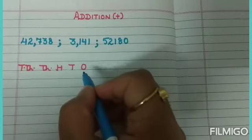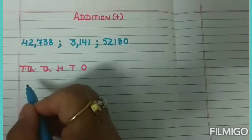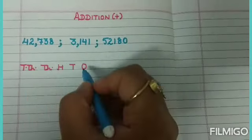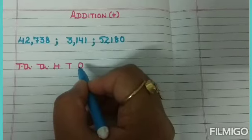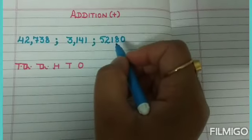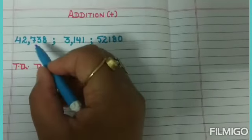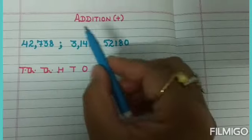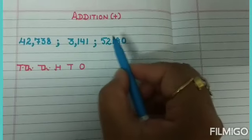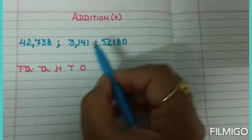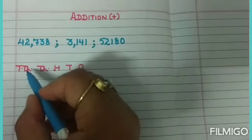The places you write depend on the maximum number of digits. If you look at this question, the maximum is five digits. No number has more than five digits, so you can write places up to ten thousand.